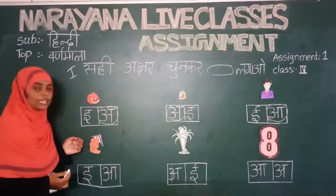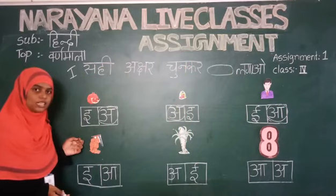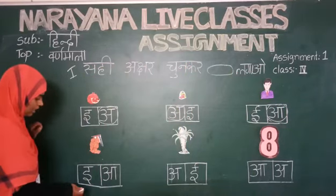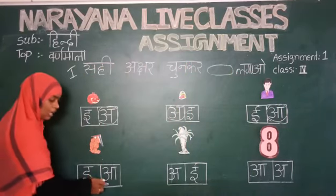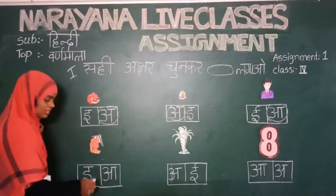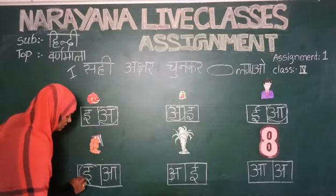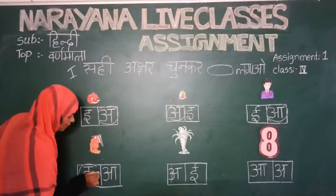Next is Tamarind — Imli. What is the first letter? E. Where is the E? We have E and A. What is the correct one? E. Then we should circle the E.